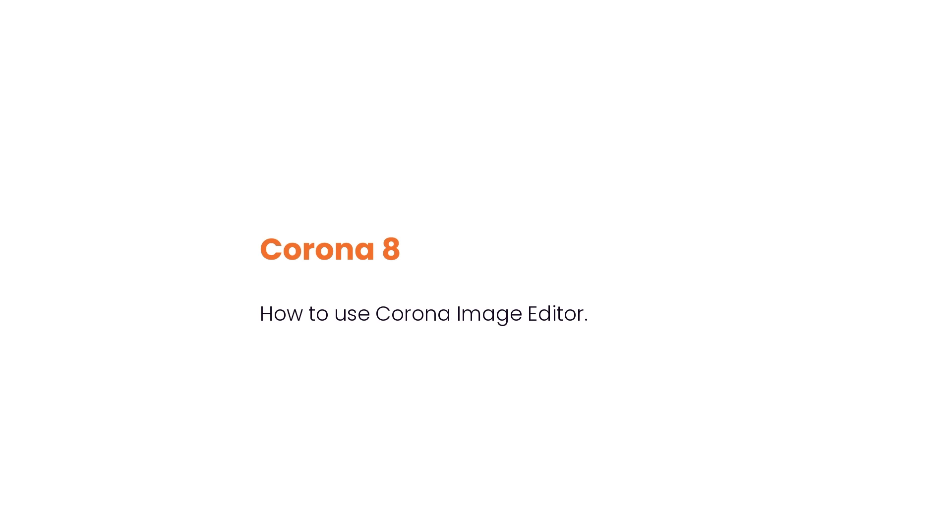Hello, this is Jake from the Krona team. In the next few minutes you'll be able to use Krona Image Editor to modify renders without having 3ds Max or Cinema 4D open. Krona Image Editor is a standalone application that comes with Chaos Krona. It allows us to load renders that have been saved as CXR files and then apply any of the post-production operations available in the Krona virtual frame buffer.